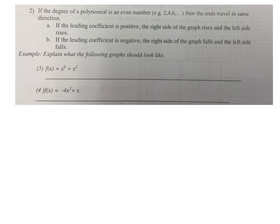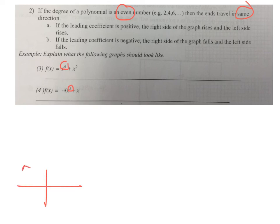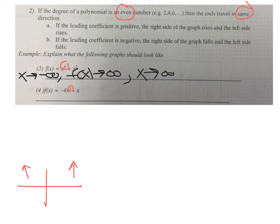If the degree on the polynomial is even — meaning the highest power is an even number — the ends go in the same direction. Even and same go together. In example 3, the degree is 6 and the leading coefficient is positive. The 6 tells us both ends go the same direction, and the positive 1 out front means both ends go in the positive direction, so the graph goes up on both sides. As x approaches negative infinity, f of x goes to positive infinity, and as x approaches positive infinity, f of x also goes to positive infinity — both match because the degree is even.